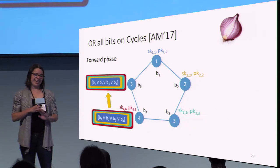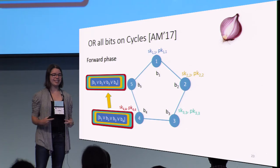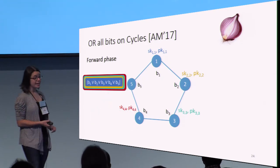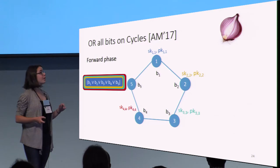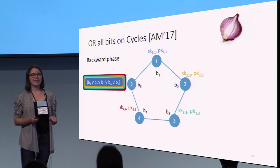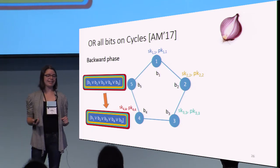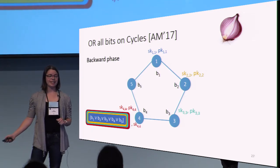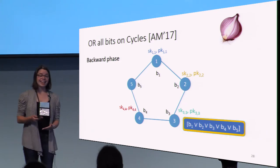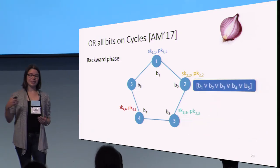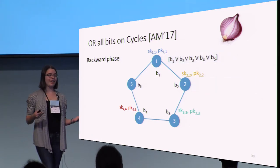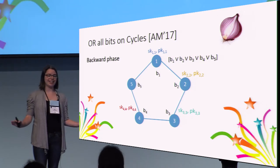And now we have the encrypted output bit. We can begin the backwards phase and start going back around the graph. Node 5 sends this entire message back to node 4. Node 4 uses the red secret key to remove the red layer and sends it back to node 3. Node 3 uses the light blue secret key to remove that layer and sends it back to node 2, who removes the layer and sends it back to node 1. Node 1 has the corresponding secret key, so node 1 decrypts the message and now has, in plaintext, the OR of all bits in the graph.